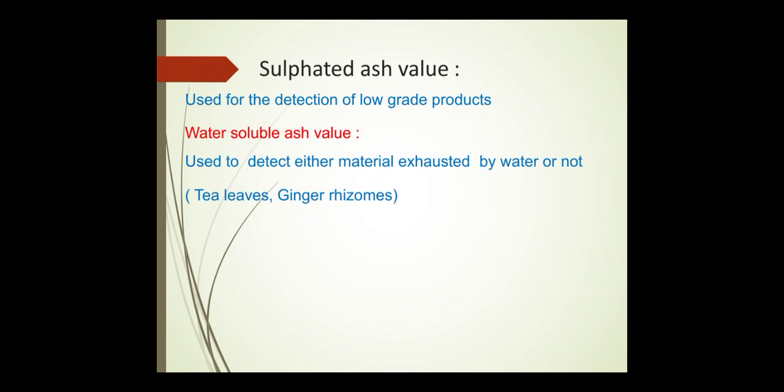Sulfated ash value is used for the detection of low-grade products. As the name suggests, sulfuric acid is used — while heating the drug, sulfuric acid is added, from which we obtain the sulfated ash. Water-soluble ash value is used to detect whether material has been exhausted by water or not. Examples include tea leaves and ginger rhizomes.